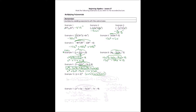FOILing the second two binomials: x times x gives x squared; outside, x times 2 gives 2x; inside, 2 times x gives 2x; last, 2 times 2 gives 4. Before going further, I combine like terms: 2x plus 2x in the center gives 4x. So the result is x squared plus 4x plus 4.